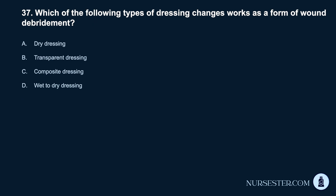Question 37. Which of the following types of dressing changes works as a form of wound debridement? A. Dry dressing. B. Transparent dressing. C. Composite dressing. D. Wet-to-dry dressing.